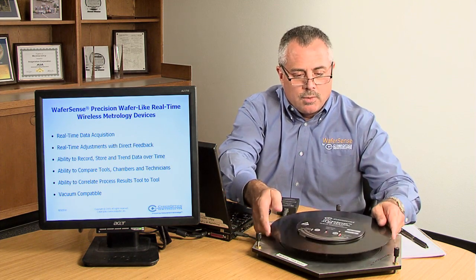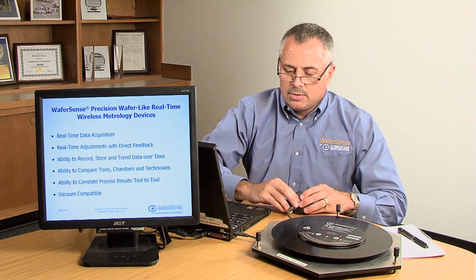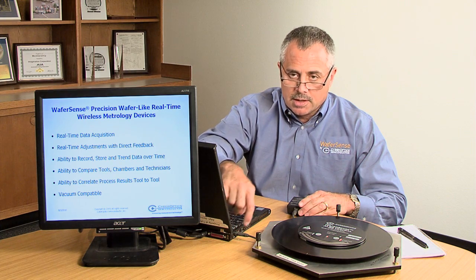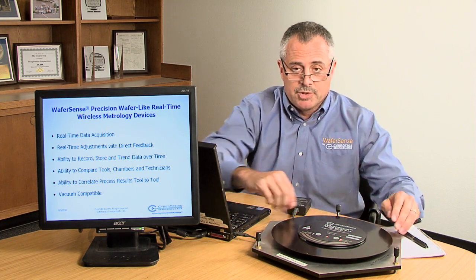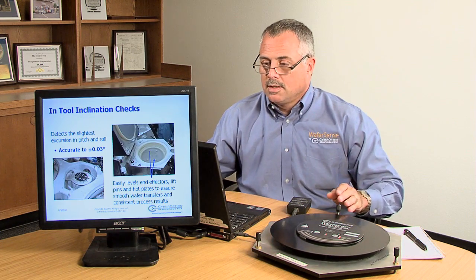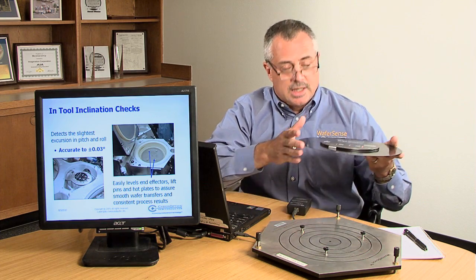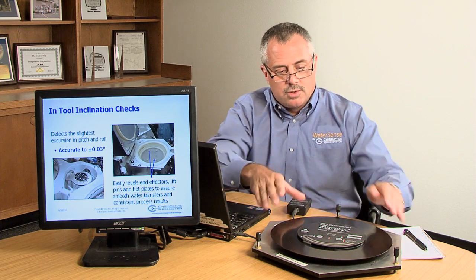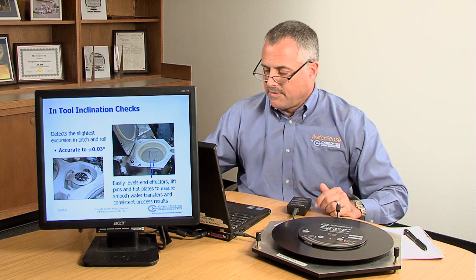The way they work is you would plug in the Bluetooth module to a USB compatible system, either a laptop or the system console. Establish the one-to-one communication link, and from there the WaferSense device can be placed in the front end and passed into the tool. No need to evacuate the chamber because WaferSense devices are vacuum compatible.